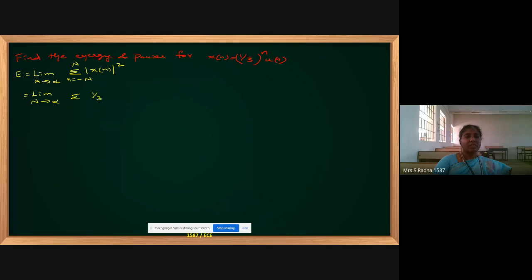The given signal is (1/3)^n · u(n). This is the full signal I am putting in place of x(n), inside the modulus squared. Because u(n) is there, you can change the summation limits to the completely positive side, because u(n) will be only on the positive side.